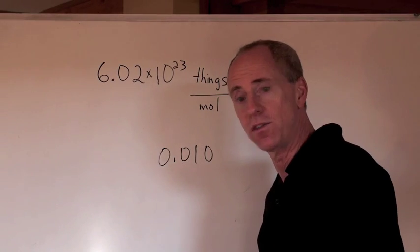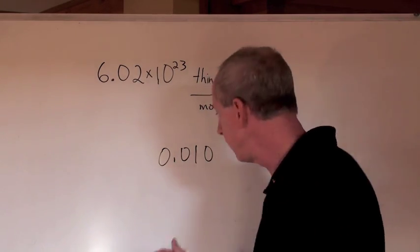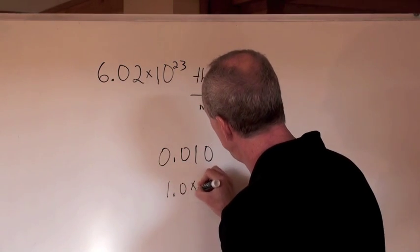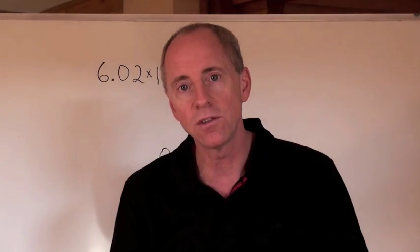So here's the thing: not significant, not significant, 1, 2. So therefore, that number has two significant digits, because it can also be written as 1.0 times 10 to the negative 2. So that is a two significant digit number.